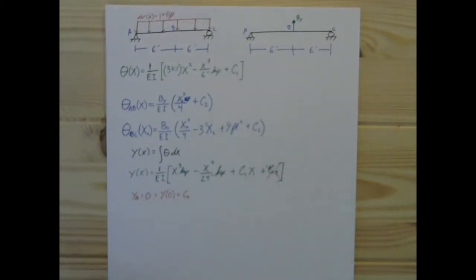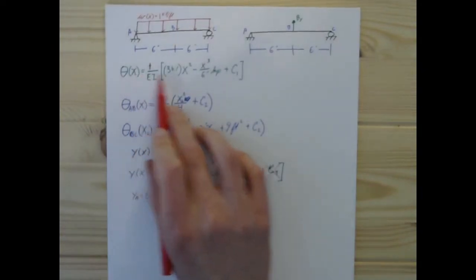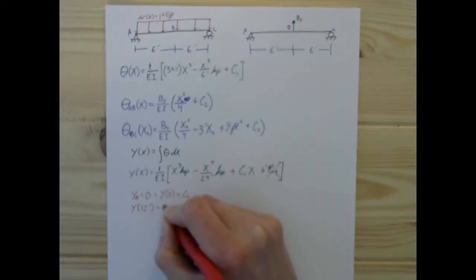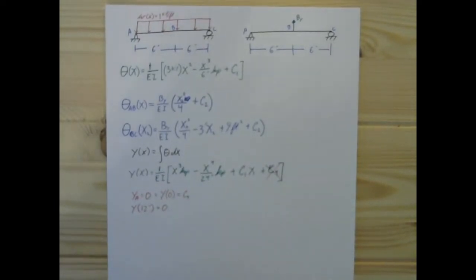We also have a second boundary condition for this equation for the distributed load, right? And that is that at 12 feet, it has to equal 0. And that's going to be a bit much, but that is enough to give us what C1 is.